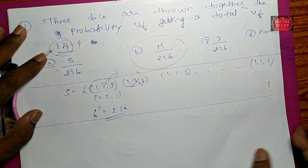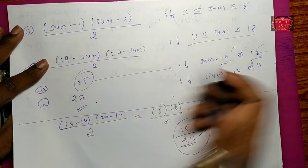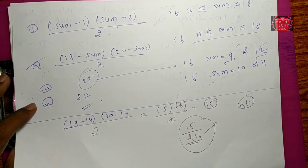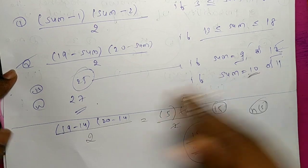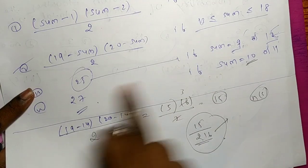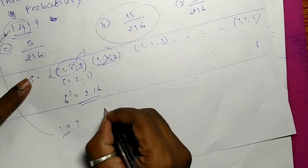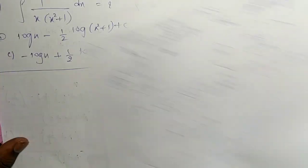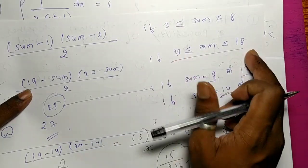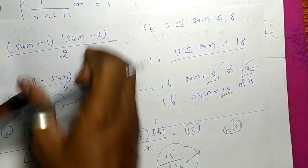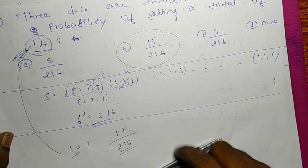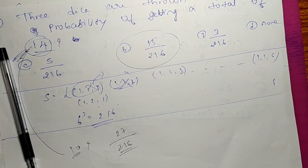The probability is 15/216. Checking another approach, some get 27/216 — but the correct answer here, using our formula, is 15/216. With this shortcut method, you can solve this type of problem in just five to ten seconds. This is the benefit of using the shortcut trick method.